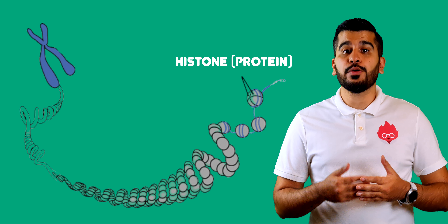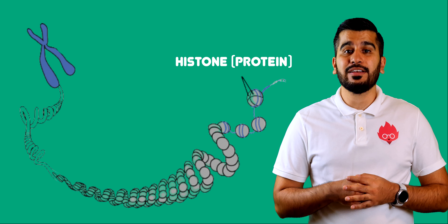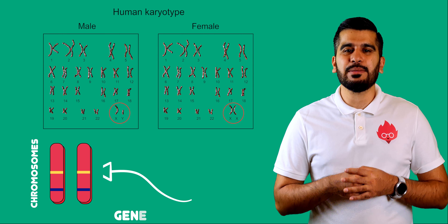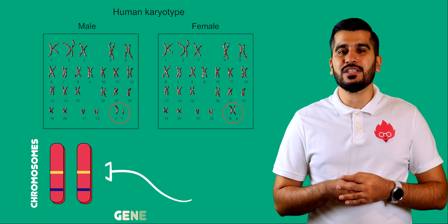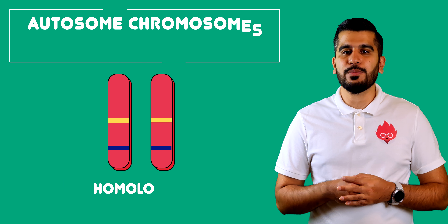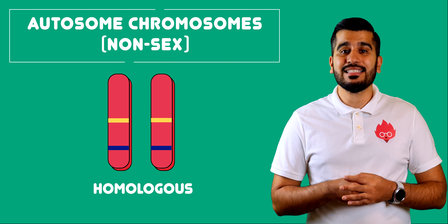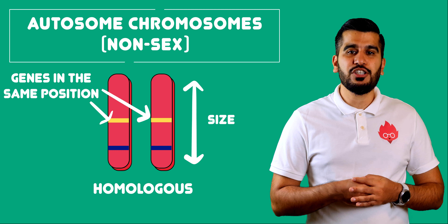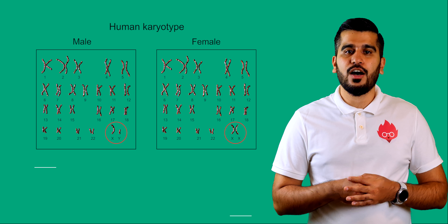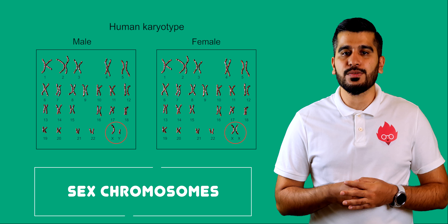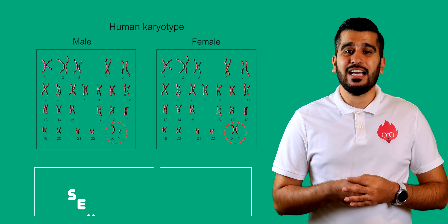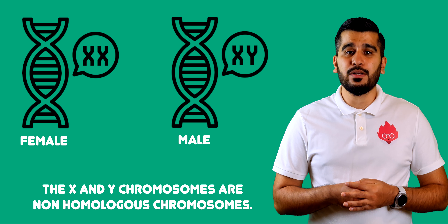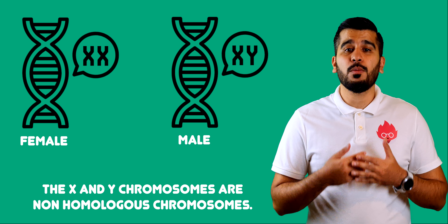DNA can wrap around proteins called histones to form thread-like structures called chromosomes. In humans, we have 23 pairs of chromosomes on which genes are located. Our non-sex chromosomes are described as homologous as they share the same structural features such as size and the same genes at the same positions. Our 23rd pair of chromosomes are our sex chromosomes and can be either XX in females or XY in males, and are described as being non-homologous.